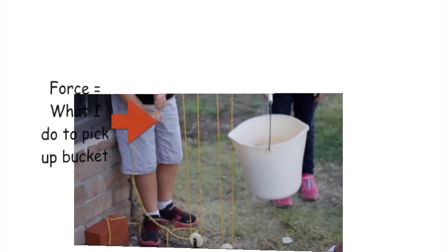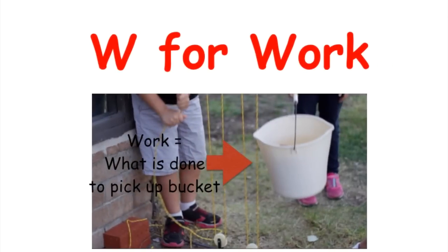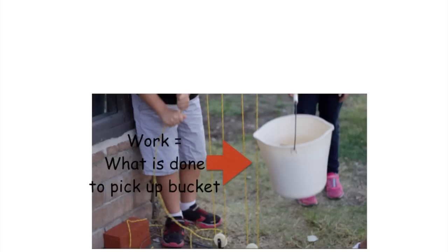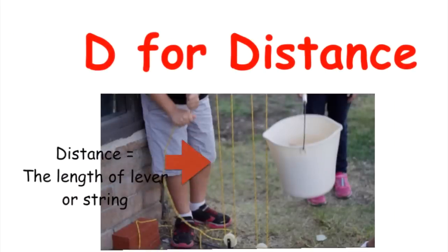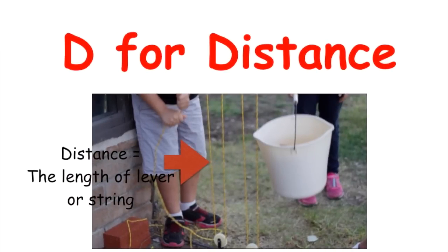The next part of the formula, W, is for work. Work is the total effort done to pick up the load, which in this case is the bucket. And finally, D is for distance. The distance in this case is the length of the lever, and the lever in this case is the string.